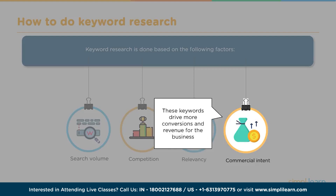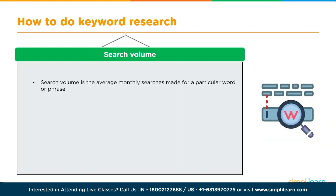Commercial intent means choosing keywords that get somebody to do what you want them to do. For example, 'download pizza dough recipes' signals someone ready to take action on your site. Search volume is the average monthly searches for a particular keyword or phrase, obtainable using Google's Keyword Planner tool in the Google Ads platform. We want to target keywords with high search volume that will help bring traffic to the website, while also taking seasonality into account.